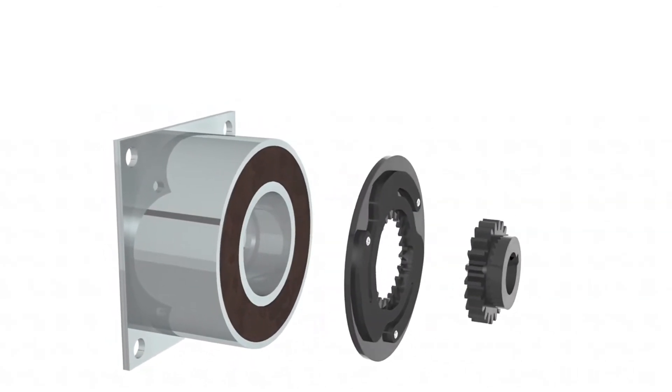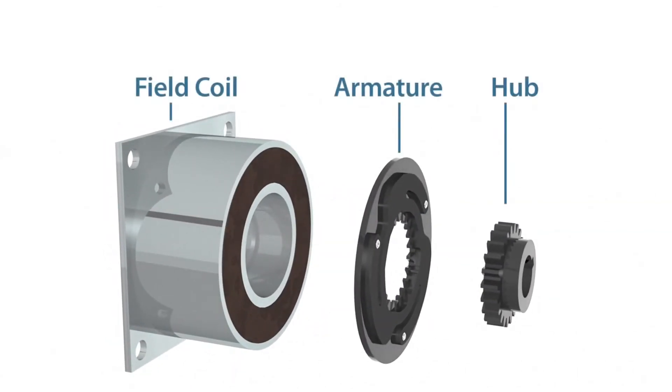The key components of the brake are field coil, armature, and hub.